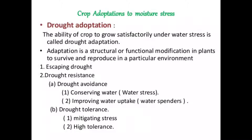In this lecture, we will study the different crop adaptations to moisture stress conditions. Drought adaptation is defined as the ability of a crop to grow satisfactorily under water stress. Adaptation is a structural or functional modification in a plant to survive and reproduce in a particular environment.